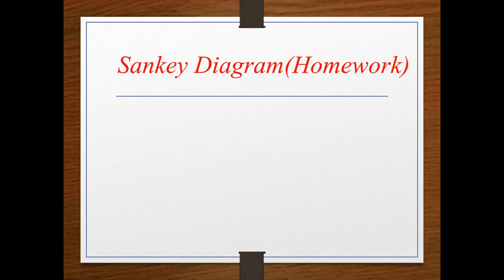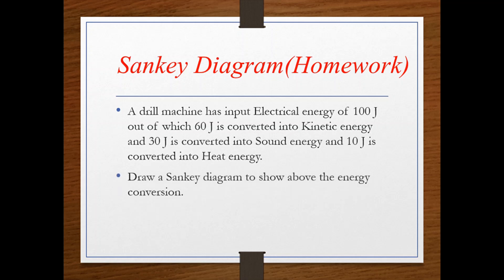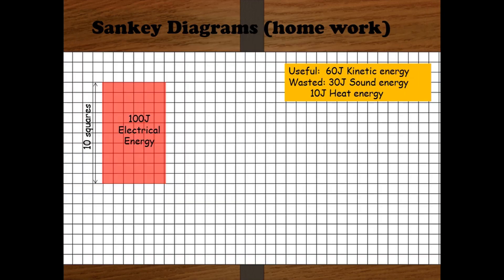Homework: an internal machine has input electrical energy of 100 joule, out of which 60 joule is converted into kinetic energy, 30 joule into sound energy, and 10 joule into heat energy. Draw the Sankey Diagram to show the above conversions. Kinetic energy of 60 joule is the useful energy since the machine moves, and the remaining 30 joule sound and 10 joule heat are wasted energy. We have now finished drawing with grid.